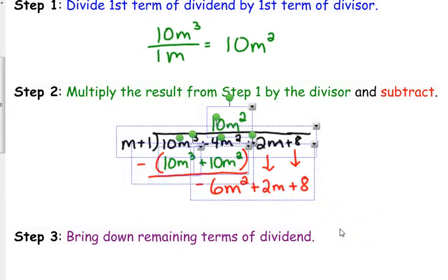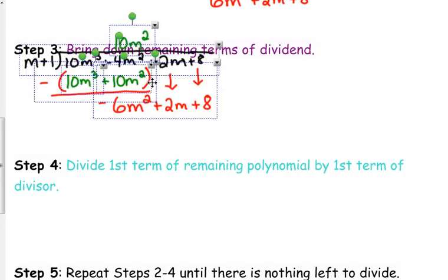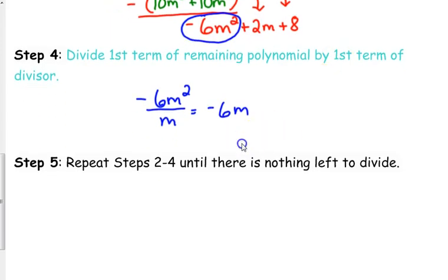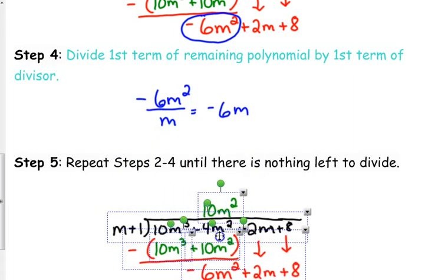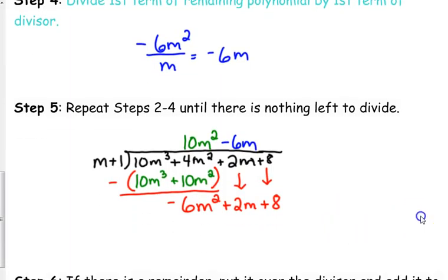We've got to keep going here. We need to divide the first term of the remaining polynomial. What I mean by remaining polynomial is this one right here at the bottom. We need to divide negative 6m squared by m. That's going to give us our next term. So, that's going to give us negative 6m. That goes in the next spot in our quotient. And then, we're just going to repeat those steps until there's nothing left to divide.